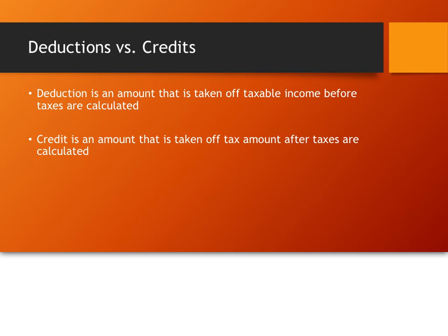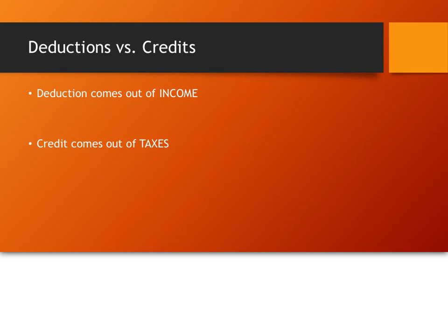A credit is something that's taken off on the back end, after the taxes are calculated. Alright, so a credit is the amount taken off how much your taxes are. So the key things to remember are that a deduction comes out of your income, and a credit comes out of your taxes.